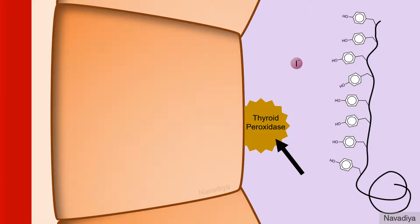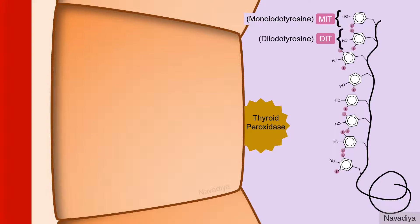Here it carries out several reactions. First it catalyzes oxidation of iodide into iodine. This iodine then binds with tyrosine. This binding is also catalyzed by thyroid peroxidase. Likewise many other tyrosine residues are also iodinated. This forms monoiodotyrosine, tyrosine with one iodine, and diiodotyrosine, tyrosine with two iodines.